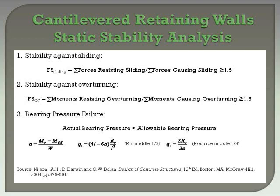There are three things we must check for in the static stability analysis of the cantilever retaining wall. These include the stability against sliding, the stability against overturning, and bearing pressure failure. For sliding and overturning, the factor of safety should be at least greater than or equal to 1.5 for static conditions.